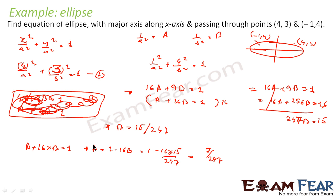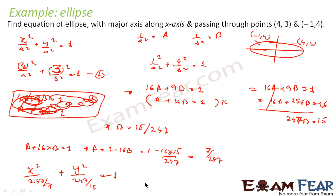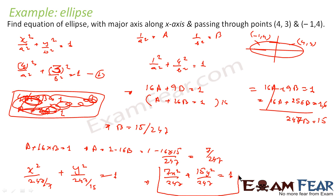So we have A and B. Since A = 1/a² = 7/247 and B = 1/b² = 15/247, the equation is x²/(247/7) + y²/(247/15) = 1, and that is the equation of the ellipse.